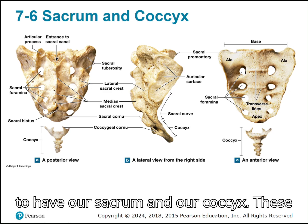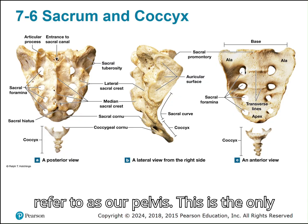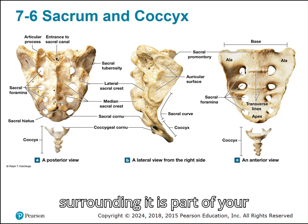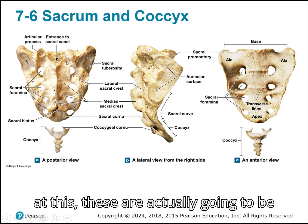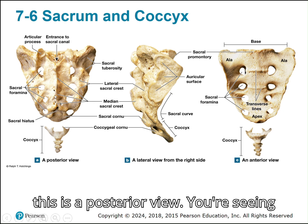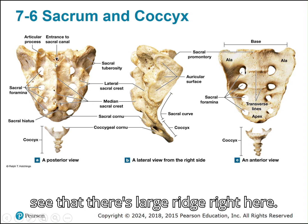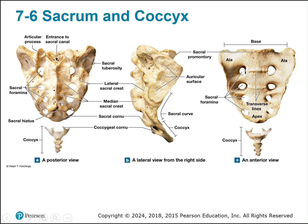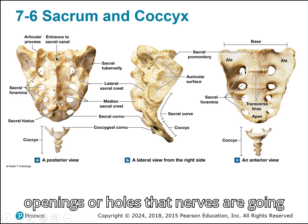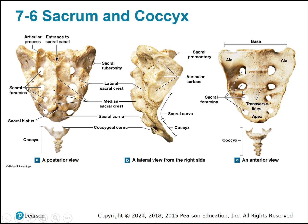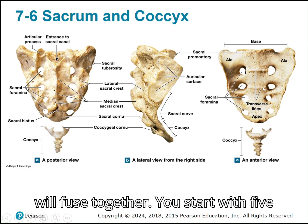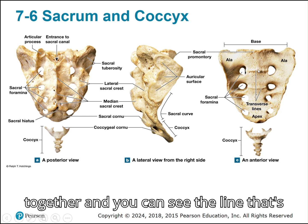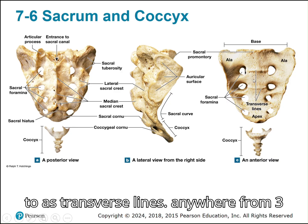At the end we have the sacrum and coccyx, which form the backside of what we call the pelvis — and this is the only part of the pelvis that belongs to the axial skeleton; the rest of the hip bone is part of the appendicular skeleton. These are actually fused vertebrae. In this posterior view, you can see a large ridge called the sacral crest, and a series of small holes — sacral foramina — left as the vertebrae fused, through which nerves run. As the five individual vertebrae fuse, you can see transverse lines where fusion is occurring.